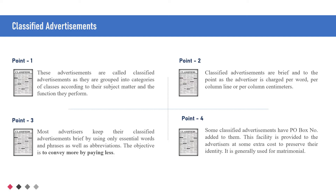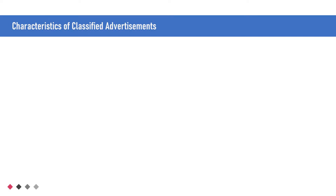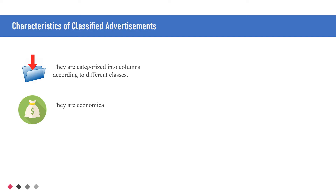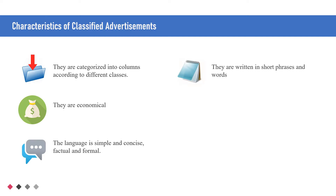It is generally used for matrimonial. Characteristics of classified advertisements: They are categorized into columns according to different classes. They are economical. The language is simple and concise, factual and formal. They are written in short phrases and words. They are brief and occupy less space.